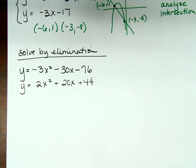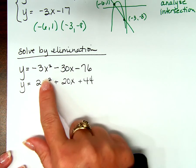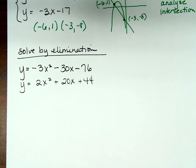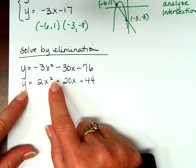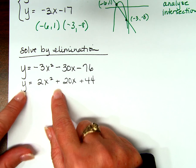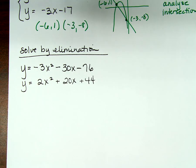So I want you to be careful about that. If there's a y and a y-squared, you have to eliminate both of them at exactly the same time for the y to truly be eliminated. So which variable would you like to eliminate in this particular problem? We have two choices: the x and the y. We can eliminate the y.